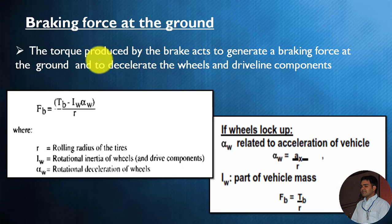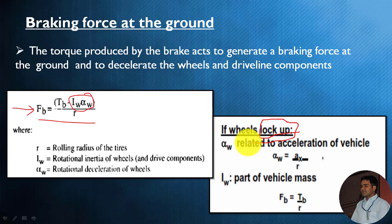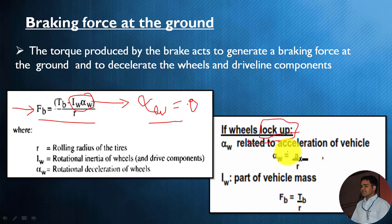The torque produced by the brake acts to generate the brake force at the ground. The brake force at the ground can be calculated with the help of this equation: brake force equals brake torque minus the rotational inertia loss (I times alpha) divided by the radius of the wheel. If we consider the wheel lockup condition — meaning the angular acceleration of the wheel becomes zero (alpha_w = 0) — the I times alpha term becomes zero, and in this condition the brake force can be calculated simply as brake torque divided by the radius of the wheel.